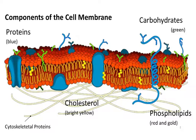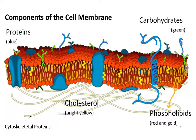The first thing I want to point out are the different components of the cell membrane. The primary component, as you can see, are phospholipids. I'm going to outline a single phospholipid here and we're going to talk more about the structure of phospholipids and why they're so superbly suited to create a lipid bilayer.